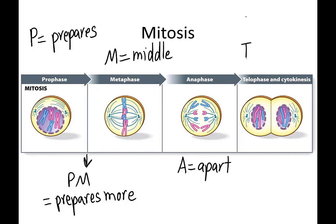The final stage is telophase, and the T stands for 'ta-da!' because the process is completed — mitosis is finished, and we now have two daughter cells when we started with one. Each of these daughter cells has a full set of chromosomes; the number of chromosomes does not change in the daughter cells compared to the parent cells in mitosis. Hopefully this will help remind you of the five stages of mitosis and the general events that occur in each. Thank you for your attention, and I'll see you in the next video.